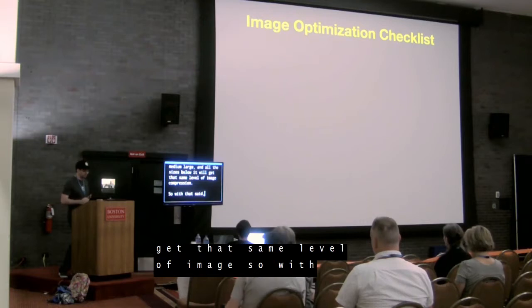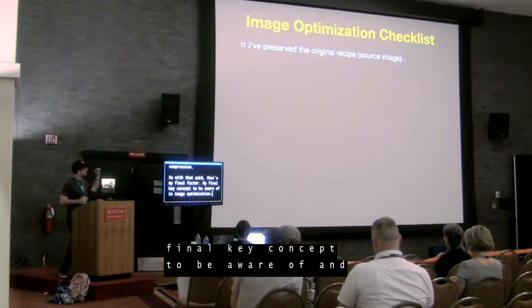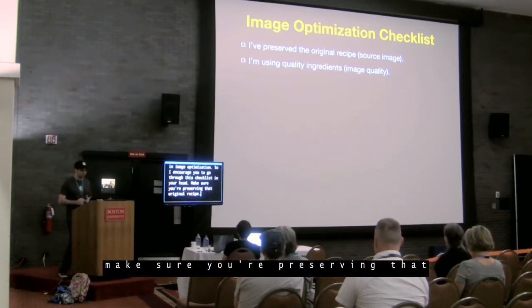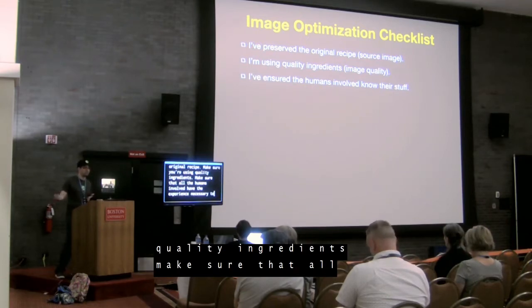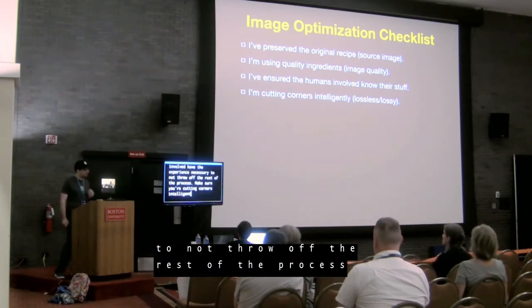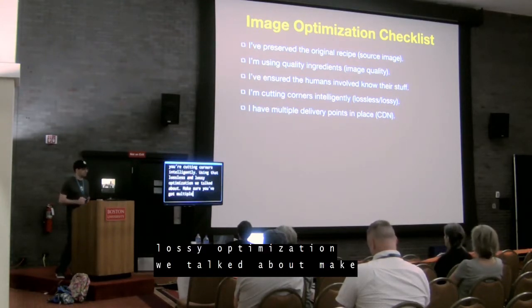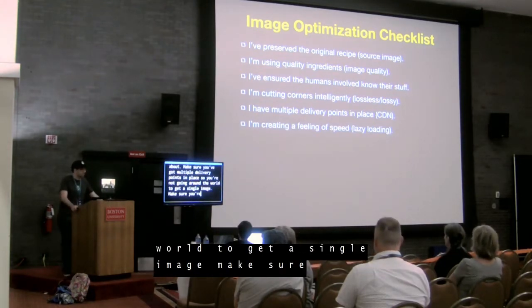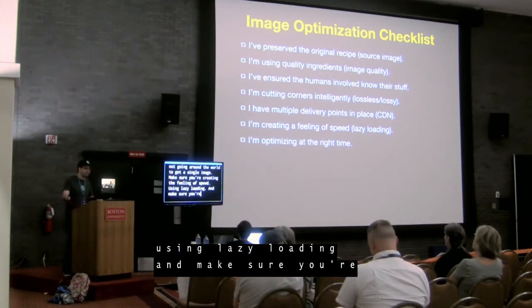That's my final key concept to be aware of in image optimization. I encourage you to go through this checklist: make sure you're preserving that original recipe; make sure you're using quality ingredients; make sure all the humans involved have the experience necessary to not throw off the process; make sure you're cutting corners intelligently using lossless and lossy optimization; make sure you've got multiple delivery points so you're not going around the world for a single image; make sure you're creating a feeling of speed using lazy loading; and make sure you're optimizing at the right time — after upload, not before.